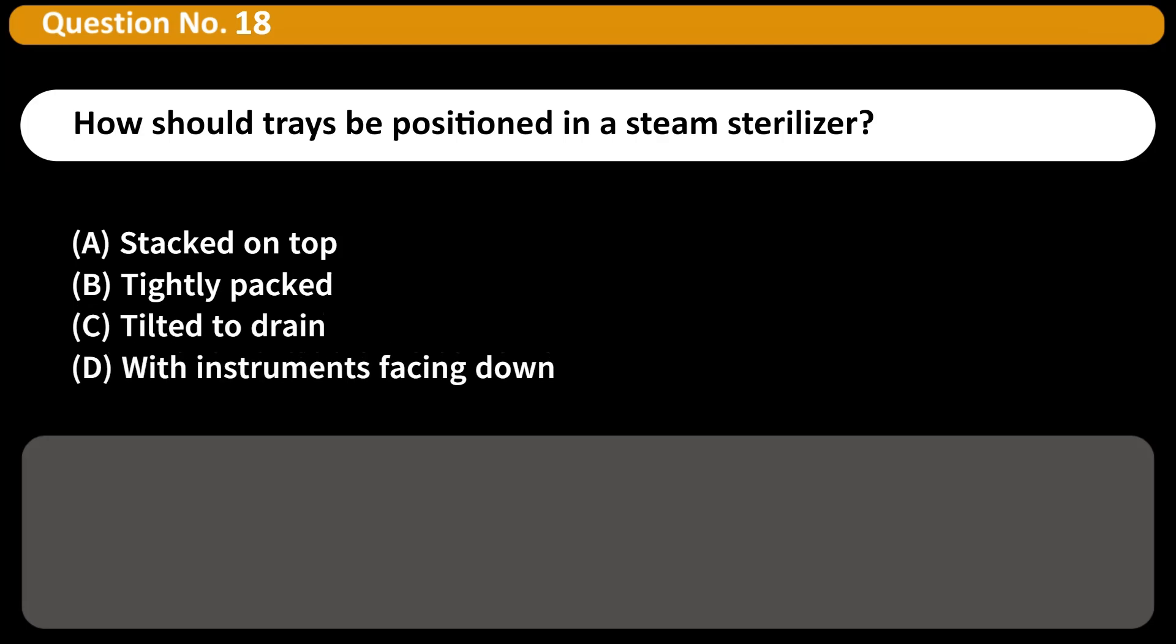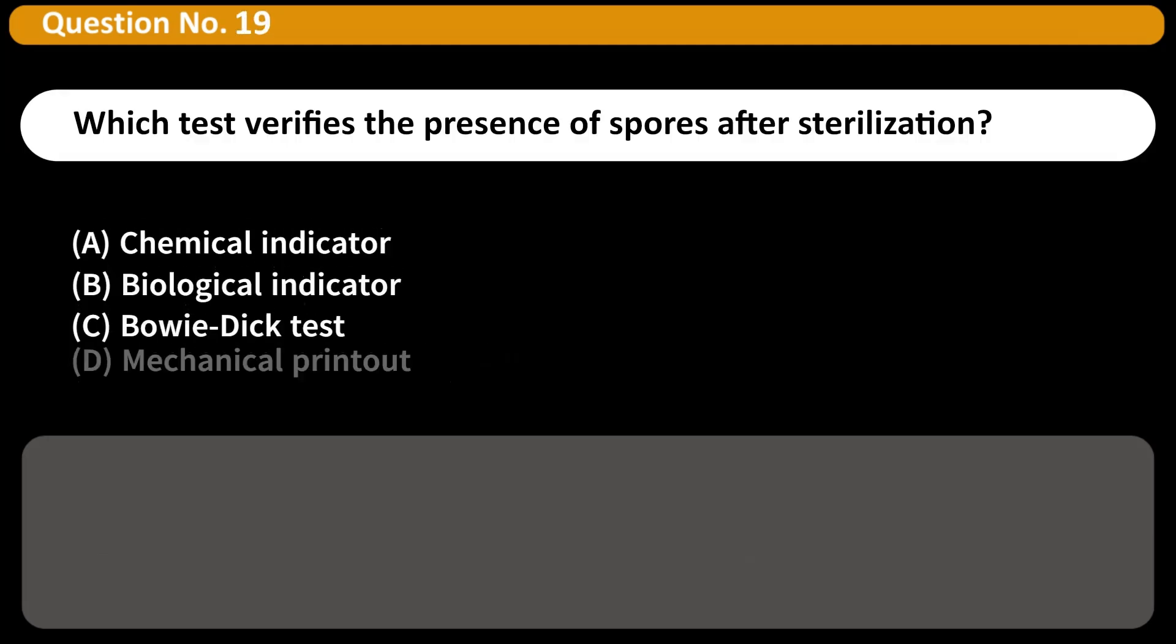How should trays be positioned in a steam sterilizer? A. Stacked on top, B. Tightly packed, C. Tilted to drain, D. With instruments facing down. Answer C. Tilting allows steam and condensate to drain properly.